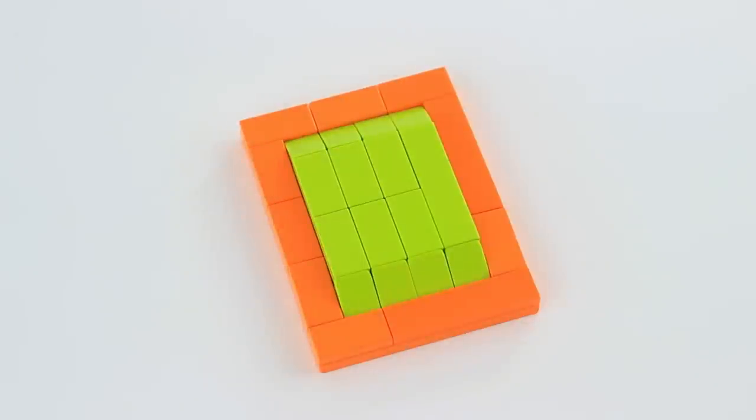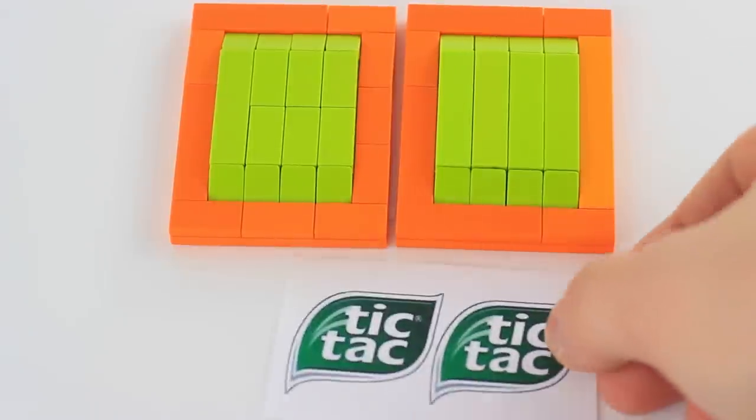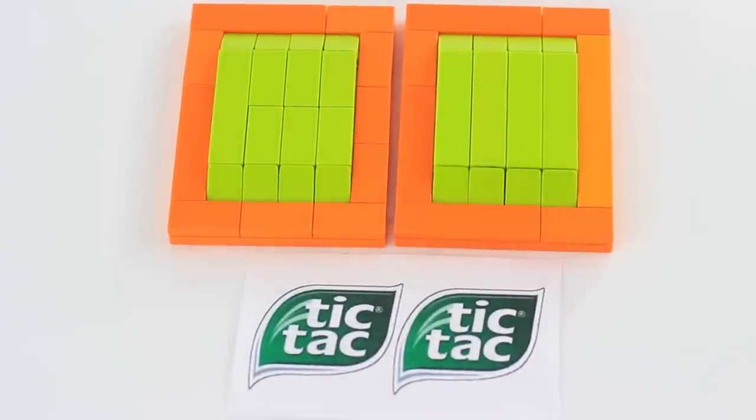And just like that, we finished building two walls of the machine. Now take everything we just built, which should just be these two Lego walls. And down in the description of this video, download and print these Tic Tac decals as just two Tic Tac logos that are the perfect size for the machine.